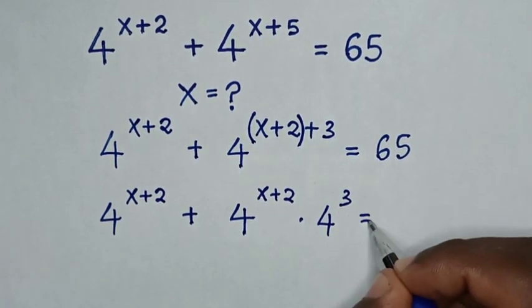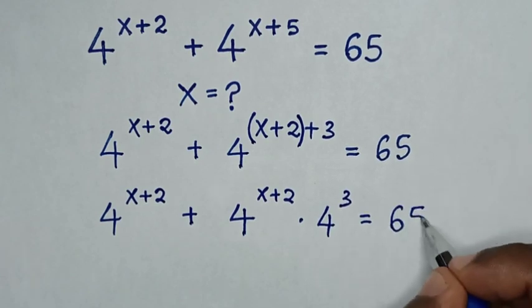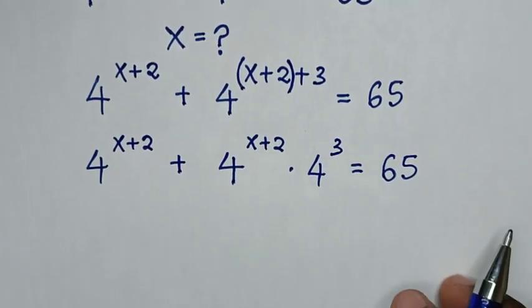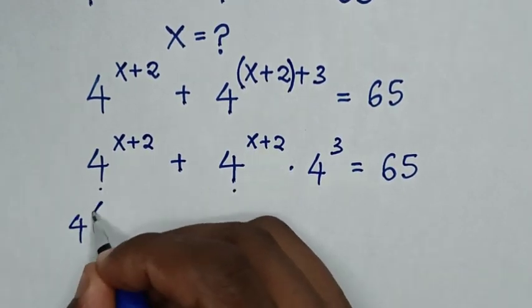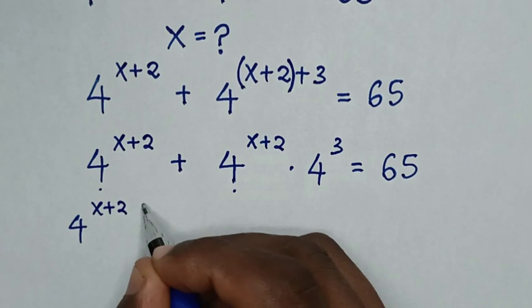Is equal to 65. Then in the next step, 4 power of x plus 2 is common, so take 4 power of x plus 2 out of bracket.